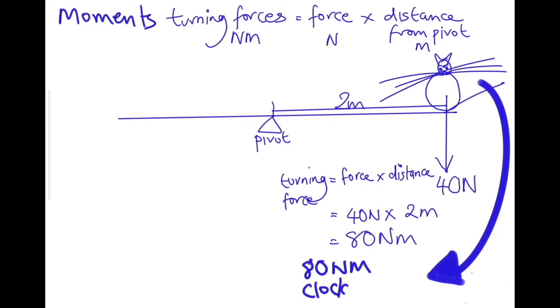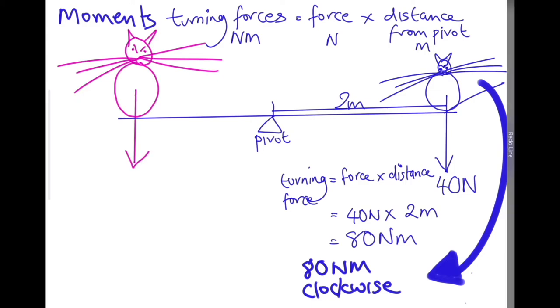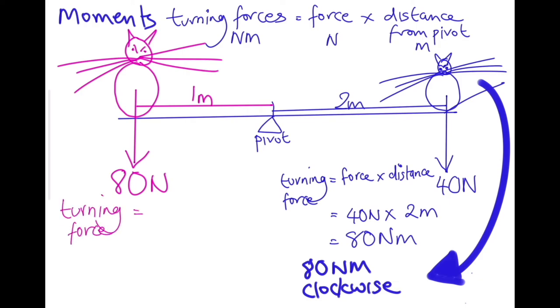Alright, let's look at the other side. This cat weighs 80 newtons. If this cat sits one meter from the pivot, even though my pink cat has a greater force than my blue cat, the turning force is the same because - let's just calculate it. So my force is 80 newtons and my distance is one meter. That will mean that my turning force is 80 newton meters.